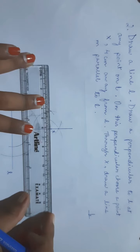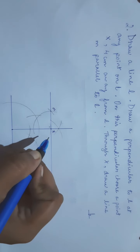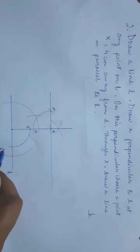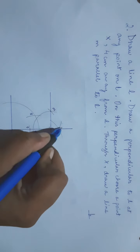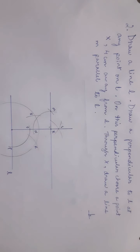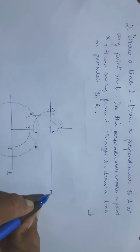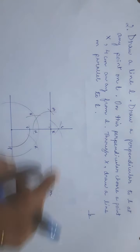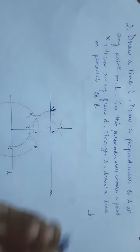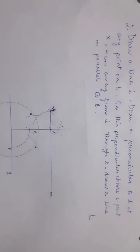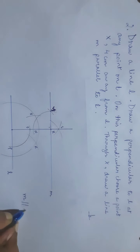Joining these two points gives our parallel line. This is our parallel line. Name all these points: this is already X, then N, O, P. All the arcs you will give names: Q, R, S. This line is L. Through X we draw a line M parallel to L, so this line will be M. The other point you can name Y. So this is our line M, this is L, and we can write M parallel to L. In this way you will construct it.